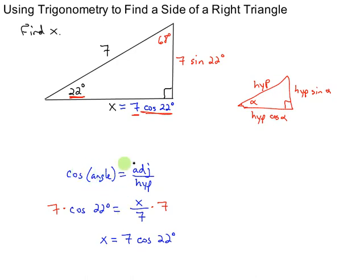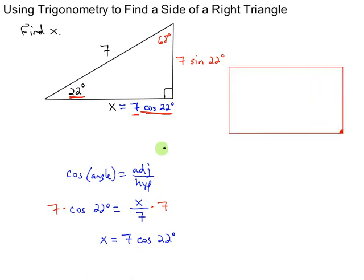Sine of an angle equals opposite over hypotenuse. And then solve for this side. So keep that in mind. It's just a quick way to know about some triangles. So 7 times the cosine of 22 degrees. Let's plug that in our calculators. And it looks like we get approximately 6.5.